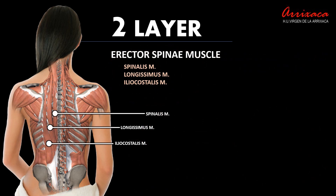On the surface we will find the erector spinae muscle, consisting of the spinalis, longus, and iliocostalis muscles. Although the muscle as a whole runs along the entire spine from the occiput to the sacrum, a part of it — the spinalis muscle — ends in the lower thoracic region.